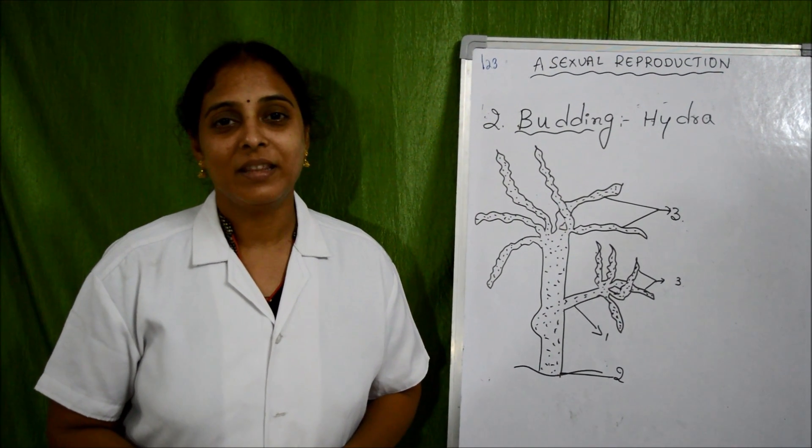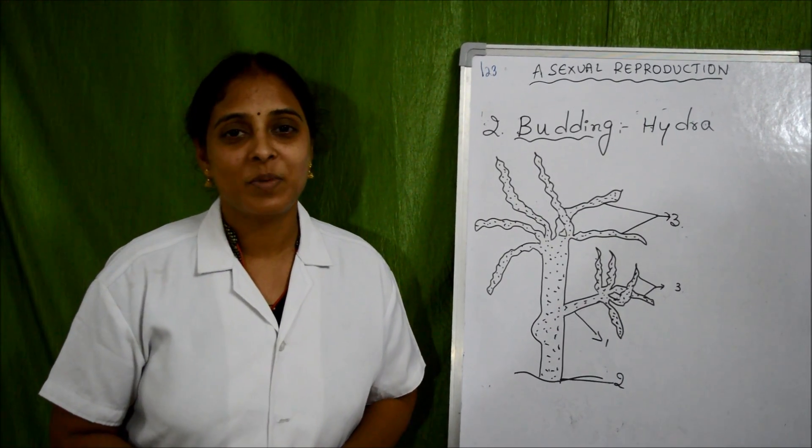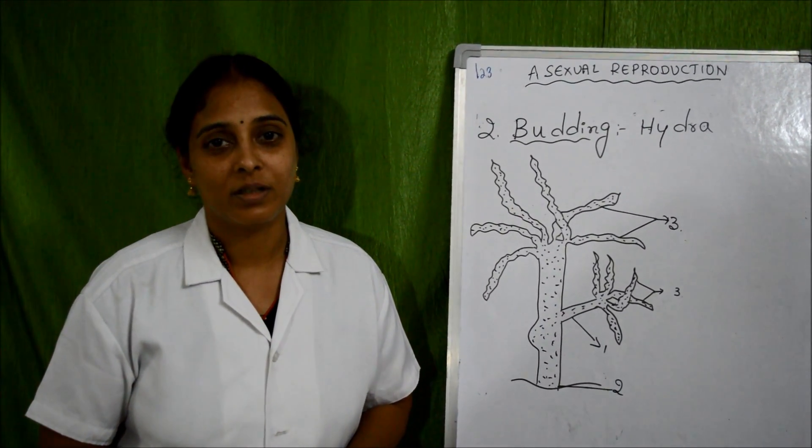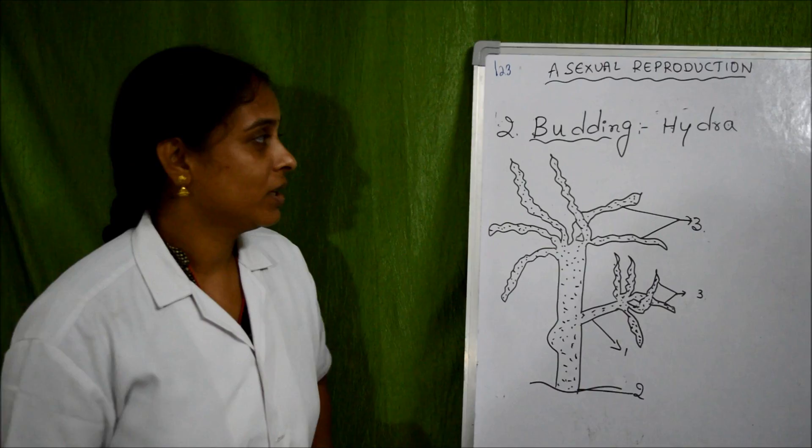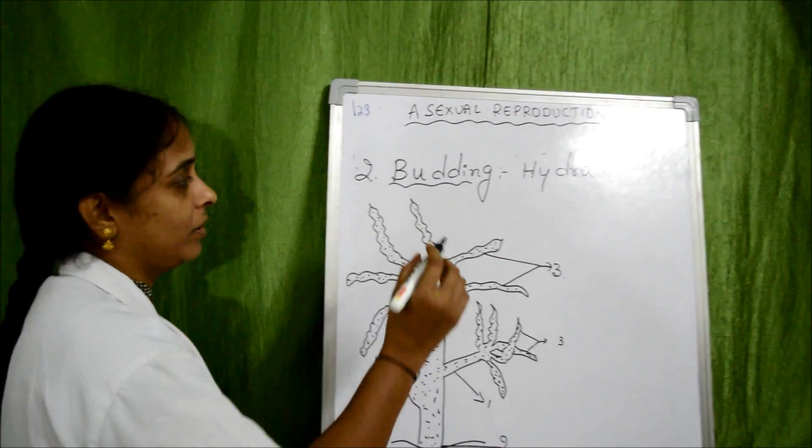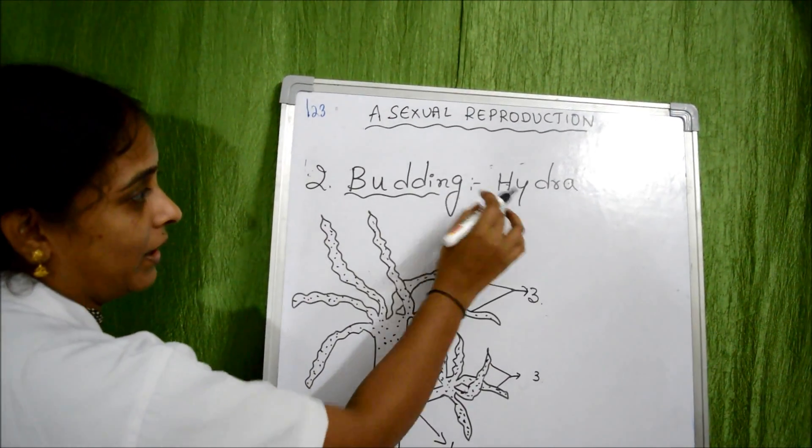Hello everyone, this is Nanditha standing before you to give an explanation about asexual reproduction. Today in this asexual reproduction, we are going to learn about the reproduction by budding in Hydra.